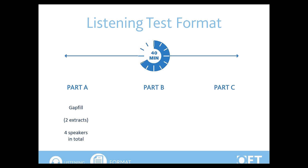Part A is a gap fill task. It includes two extracts with two speakers in each. The format is a healthcare consultation between a patient and one of the healthcare professions who can take OET. Part B is a multiple-choice task. It includes six short extracts with one question per extract. There can be either one or two speakers in each. The format is workplace communication between colleagues or healthcare professional and patient.